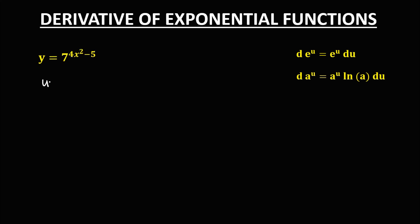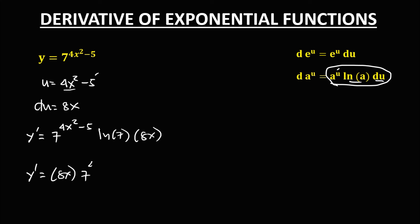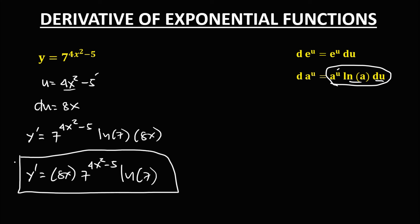Then for this given, u is equal to 4x squared minus 5, and for the derivative of u: the derivative of 4x squared is 8x, and the derivative of negative 5 is 0. Using the formula to find the derivative, we have y prime equals a to the power u, that's 7 to the power 4x squared minus 5, times 8x, times ln 7. So this is now the derivative.